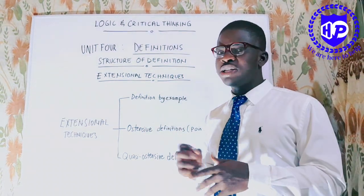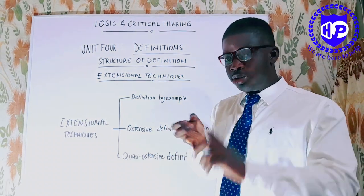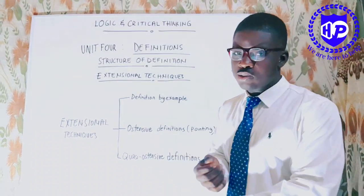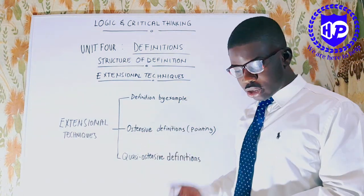So a pen. The intension being a writing instrument. You can give examples like pen, pencil, chalk, crayon, color pencil. The extensive definition is just referring to pointing.